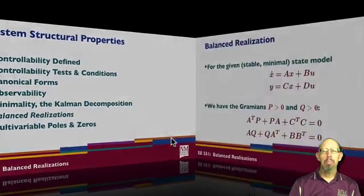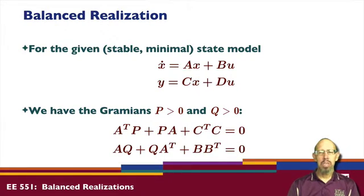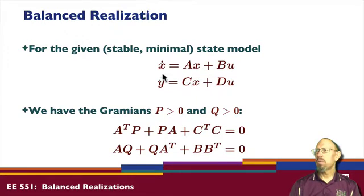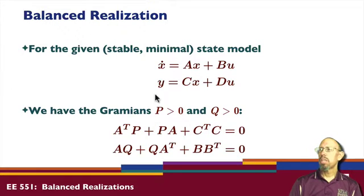So what is a balanced realization? It is a particular state space form that has certain benefits. Given a stable minimal state model — notice it has to be stable, so that's a limitation, but it's not too bad — where x-dot equals Ax plus Bu and y equals Cx plus Du.